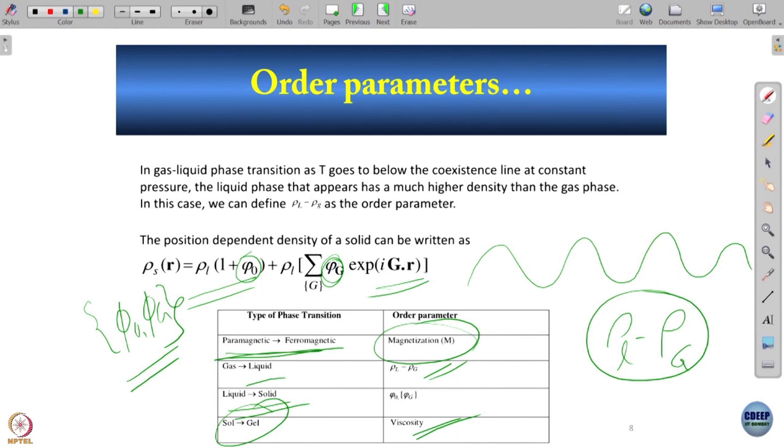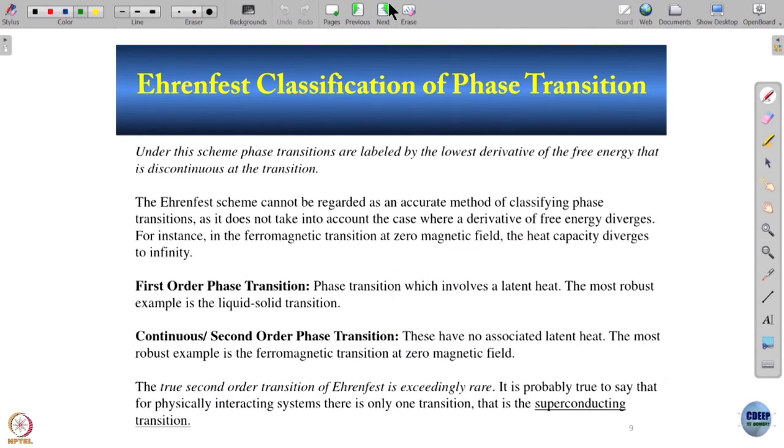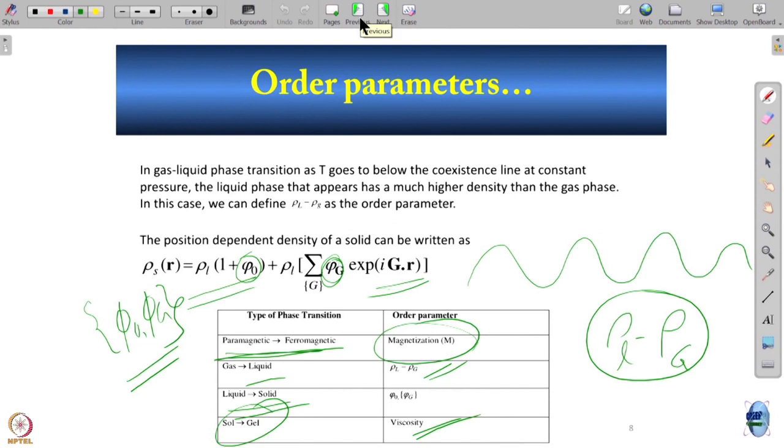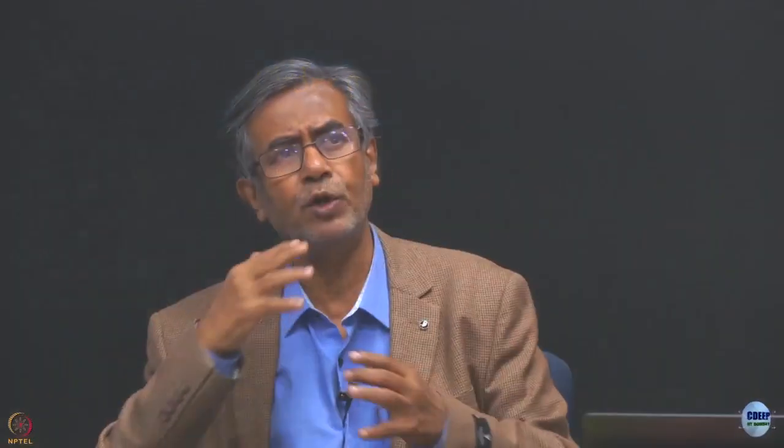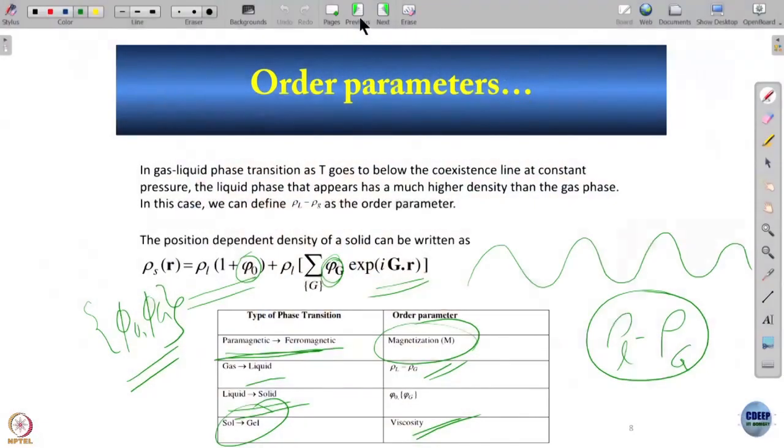Why did Landau define the order parameter? Landau wanted to describe phase transition and was looking for a quantity to quantify the change. If you want to describe a free energy, you want a smallness parameter to expand about—and that smallness parameter is the order parameter. It is something which is zero and then becomes non-zero, so you can do a Taylor expansion in this small parameter. The order parameter becomes the smallness parameter in the Taylor expansion—that was the beautiful idea of Landau.